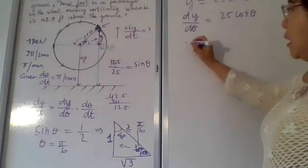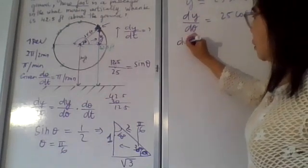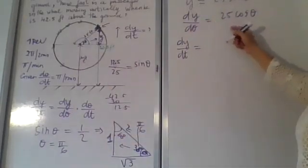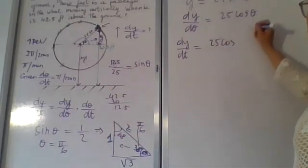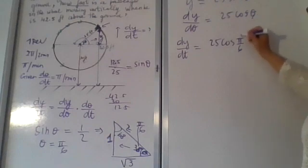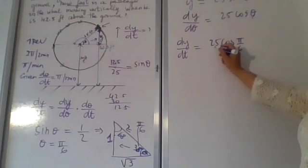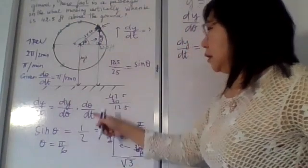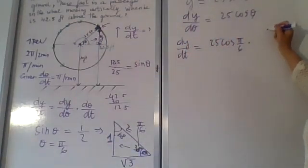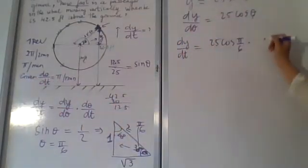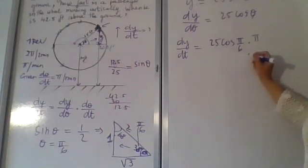So dy over d theta is 25 cos theta. We substitute theta with π over 6 since we know the angle is π over 6. So dy over dt equals 25 cos(π/6) times d theta over dt, and d theta over dt is the given information: π per minute.